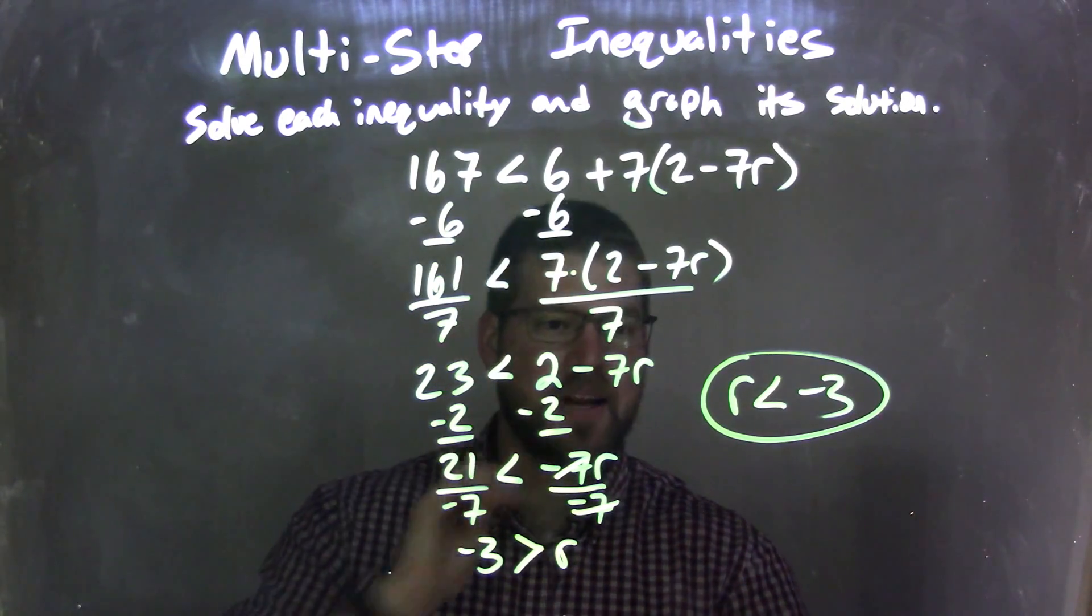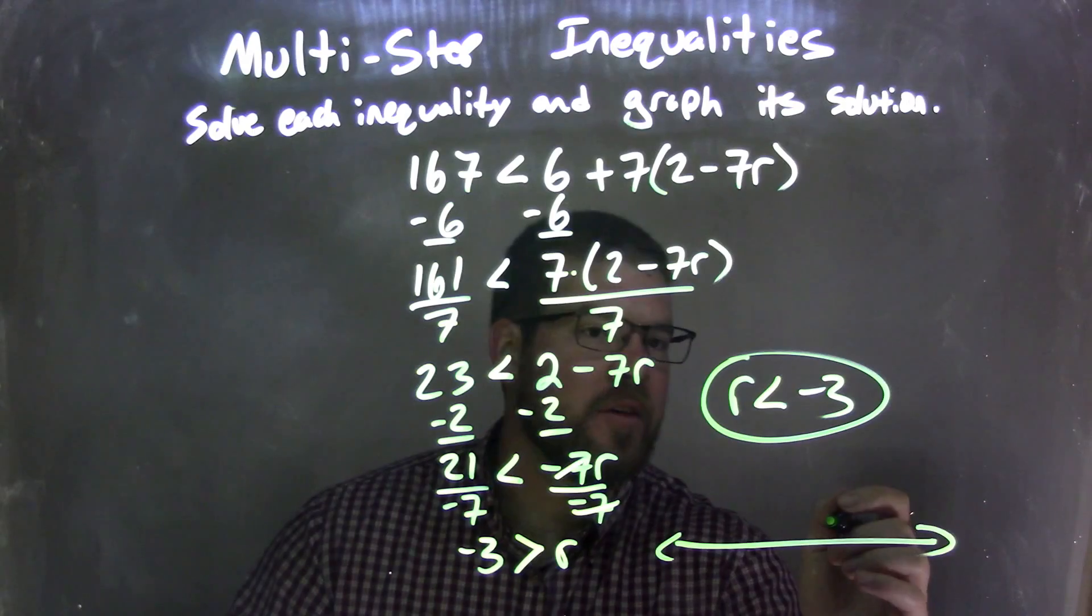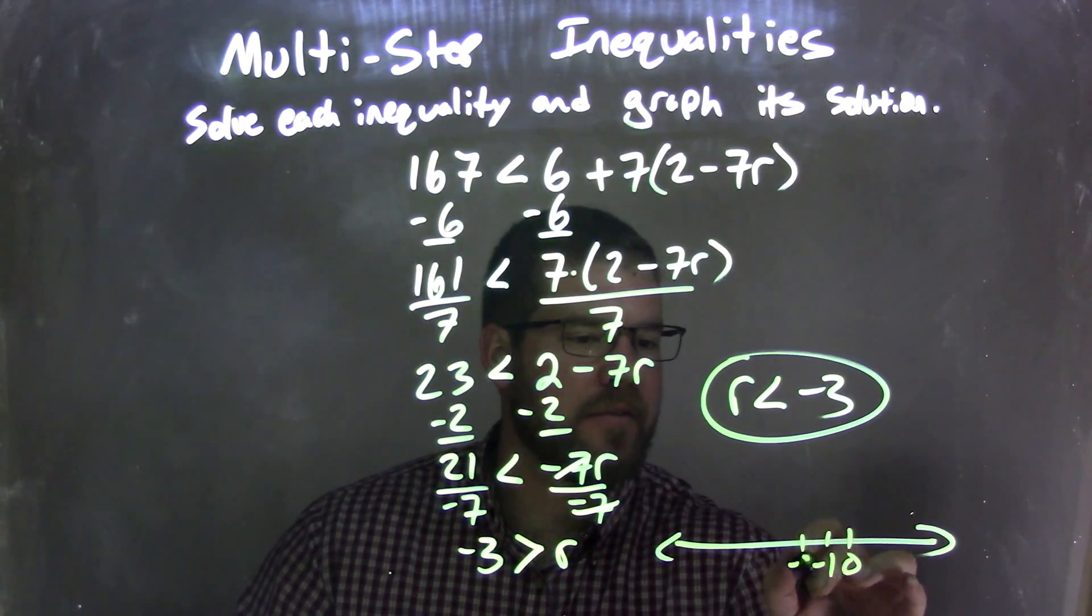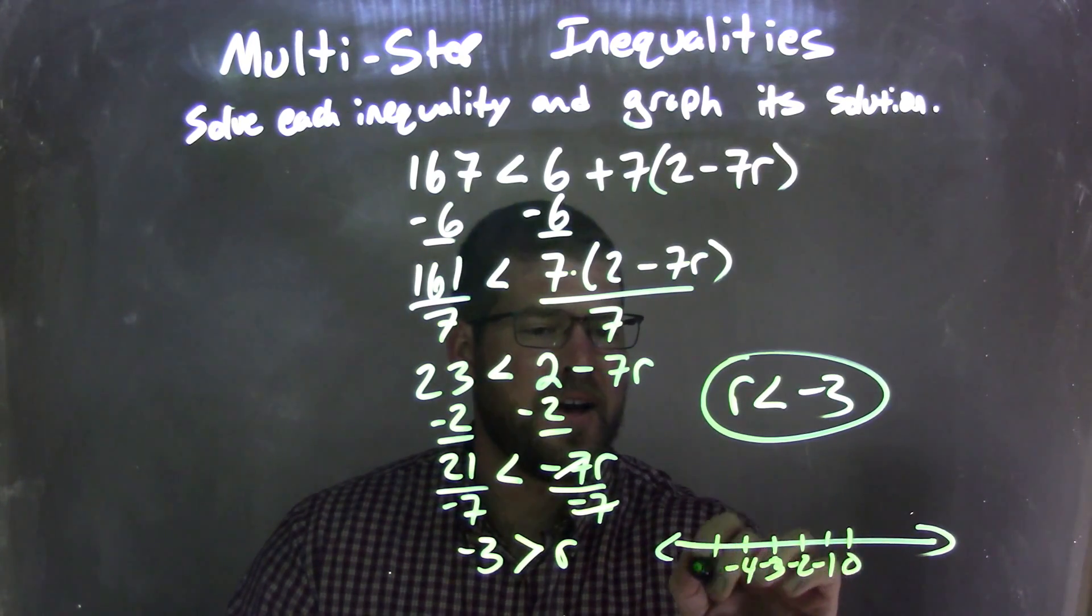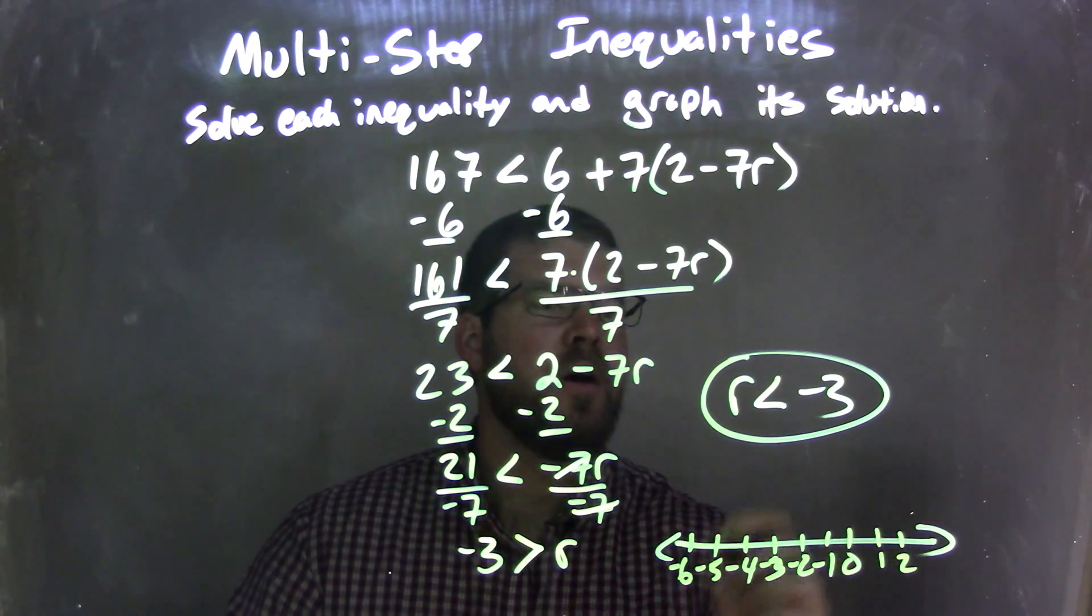So now we have our final answer. I need to graph it. We have r is less than negative 3. So we have 0, negative 1, negative 2, negative 3, negative 4, negative 5, negative 6, positive 1, and positive 2.